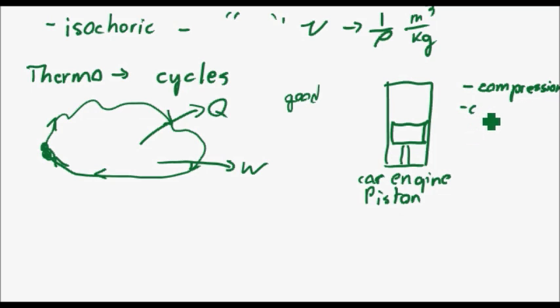So pistons typically go through compression, combustion—I'm going to abbreviate these—expansion, and exhaust.